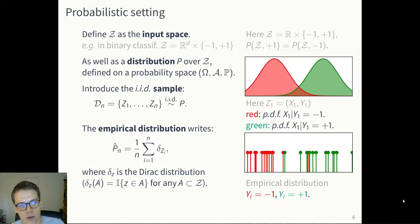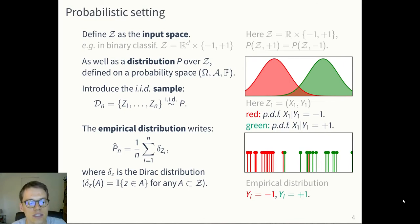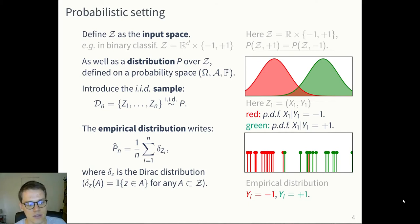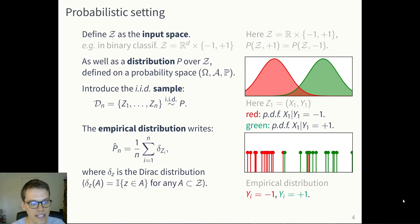In a probabilistic setting, you have some distribution over some input space. This input space we call Z and the distribution we call P, defined on some probability space. The input space Z in binary classification is just some features and the associated class, so minus one or plus one. From this distribution, you derive an i.i.d. sample that we call D_n — n observations of the probability distribution P.